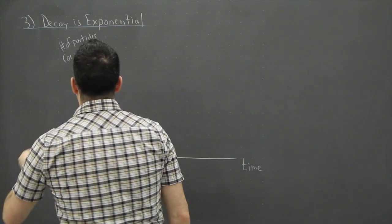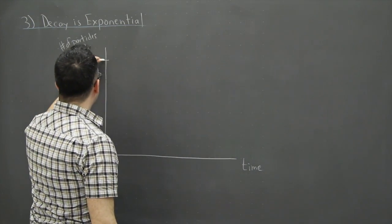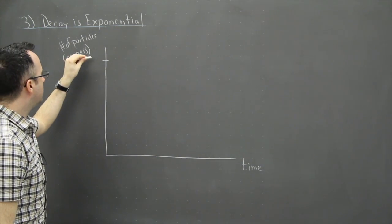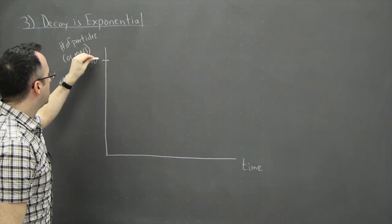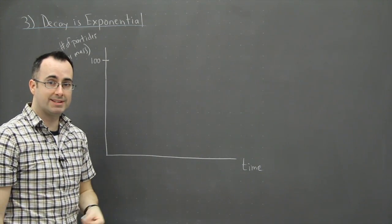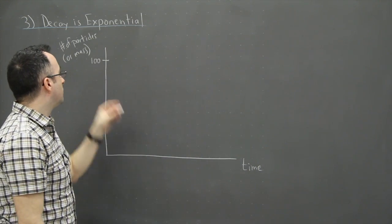Now, what if we take a look at this and say, at some time t equals zero here, we're going to say then that there's maybe a hundred particles or a hundred grams of this material. This doesn't really matter. But we'll have a hundred.